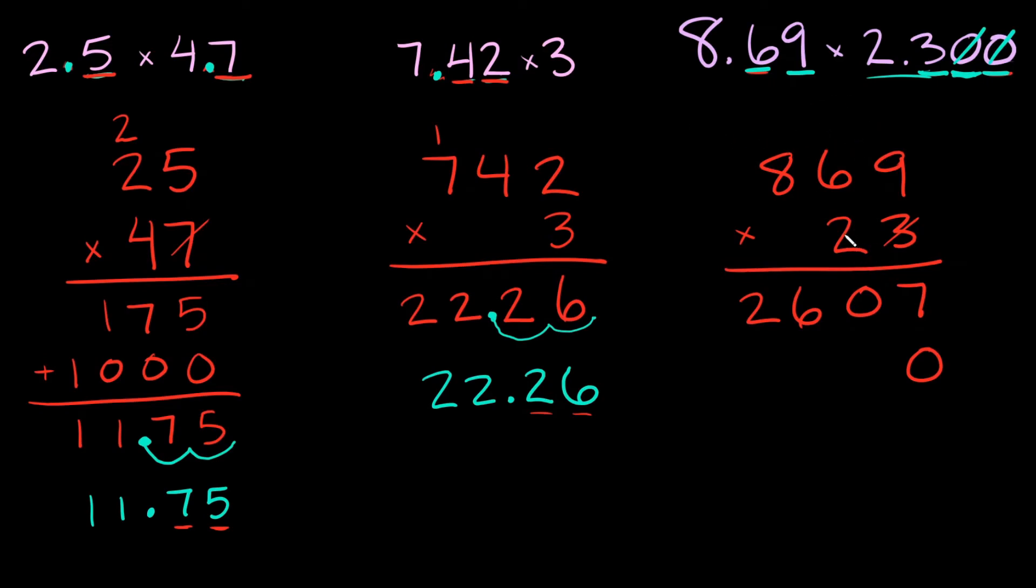Now we can multiply the 2. So 2 times 9 is 18. So I'll put the 8 there and then carry the 1. Then we have 2 times 6 which is 12. Then 12 plus 1 is 13. So put 3 there carry the 1 and then we have 2 times 8 which is 16 and then 16 plus 1 is 17.